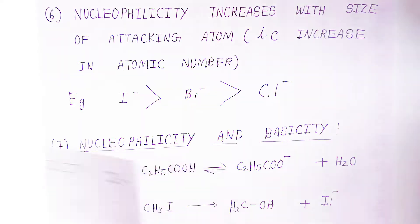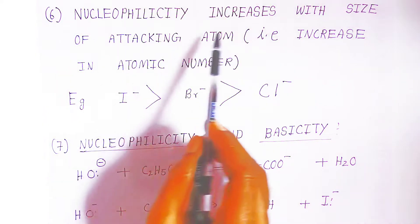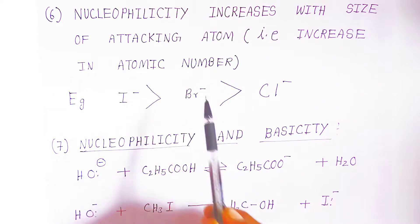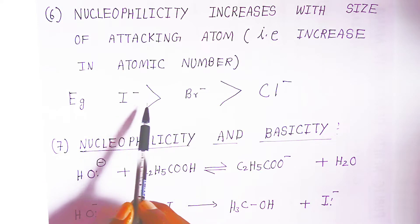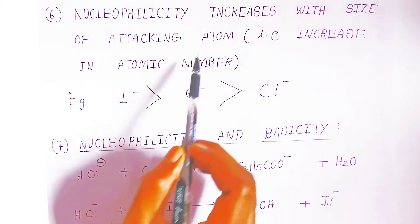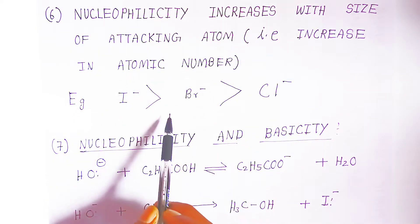Nucleophilicity increases with the size of attacking atom - that is, increase in atomic number. Here students, iodine size is bigger. Nucleophilicity increases with the size of the attacking atom.